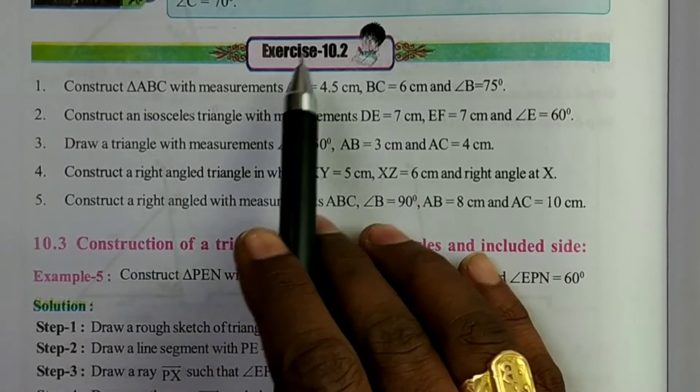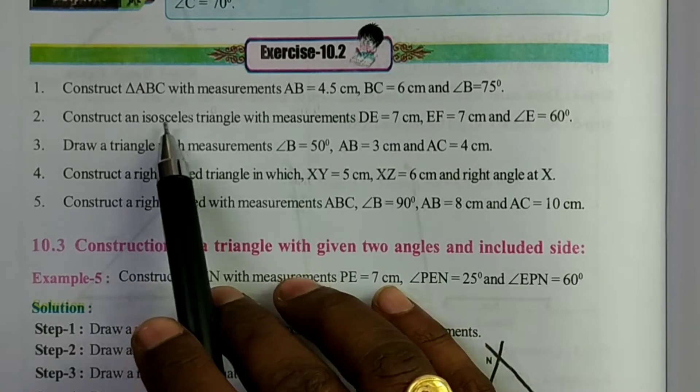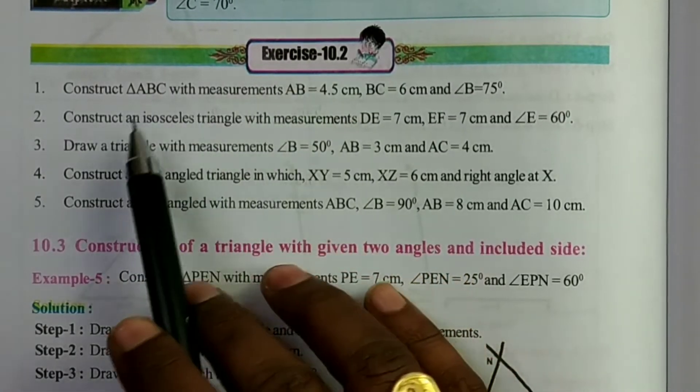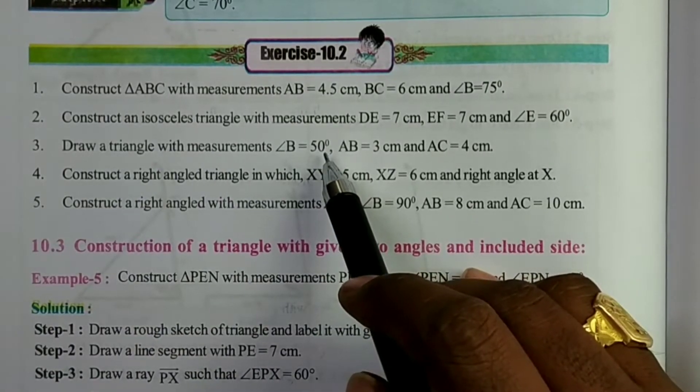From this video I am going to explain the construction of a triangle from exercise 10.2, second problem of class 7 from the AP state board.